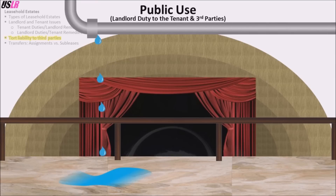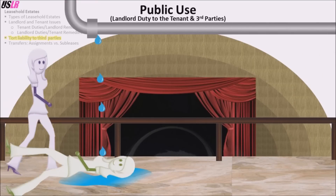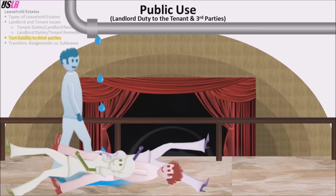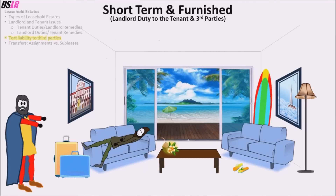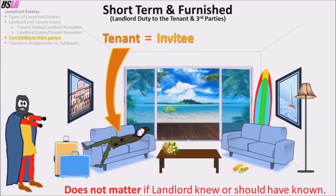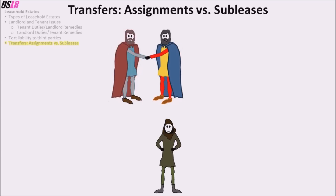Under the public use rule, the landlord is liable if he knows or should know that the tenant makes public use of the land (for example, as a concert hall, restaurant, or store), that there is a defect, and that the tenant will not fix the defect. For a short-term lease of three months or less of a furnished dwelling, the tenants are treated as invitees, and regardless of whether the landlord knew or should have known of the defects, the landlord is liable.